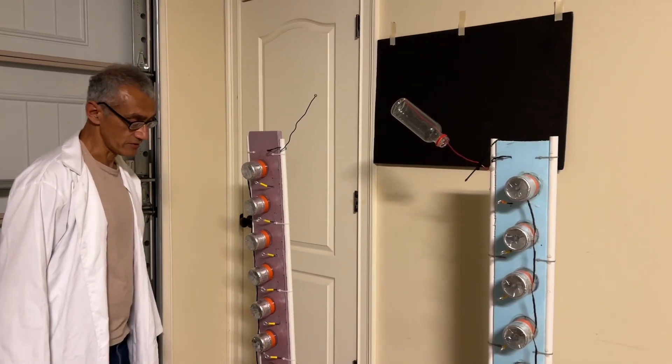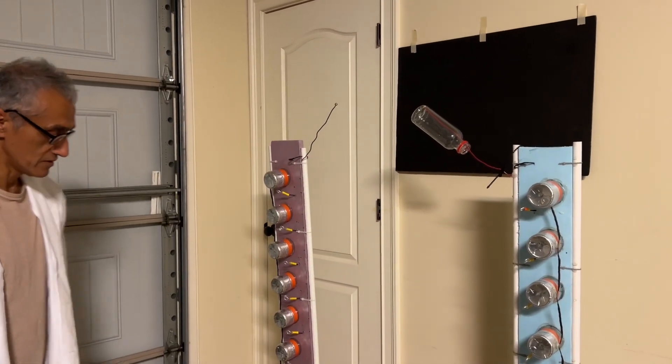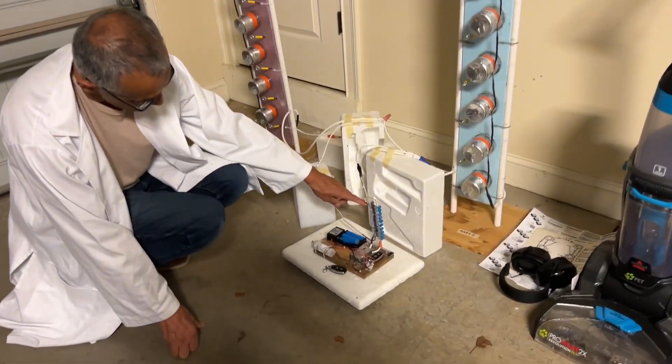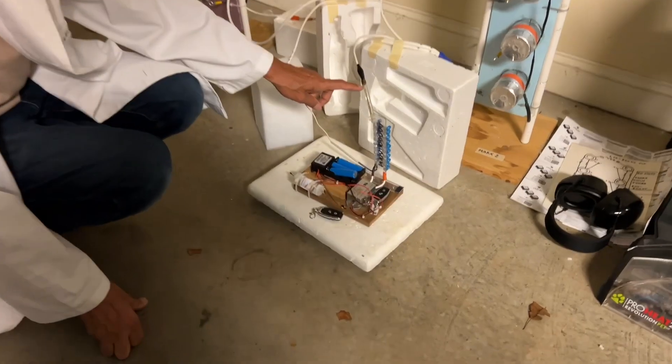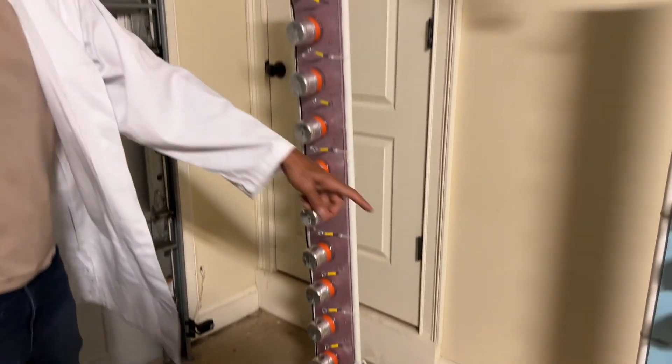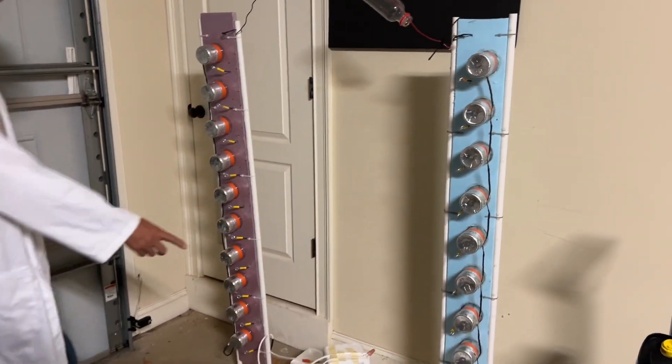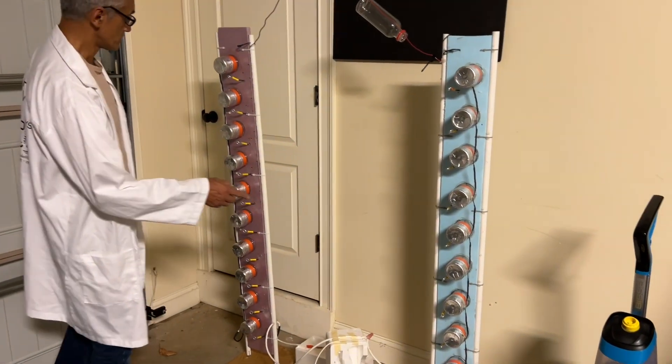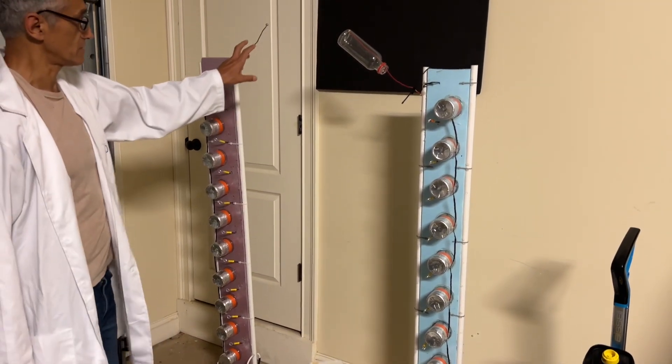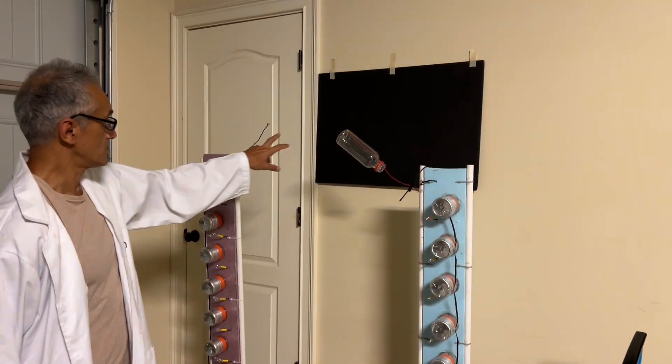The way that we're going to do this is using this device here. This device consists of a voltage multiplier which generates 40,000 volts, and then that 40,000 volts goes into this twin tower voltage multiplier, which takes the 40,000 and multiplies it by 20 times. You get enormous voltages building up at these two terminals.